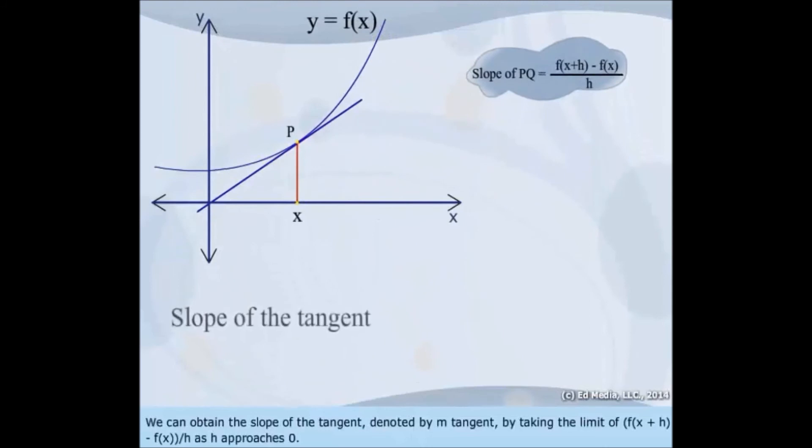We can obtain the slope of the tangent, denoted by m tangent, by taking the limit of f(x + h) minus f(x) over h as h approaches zero.